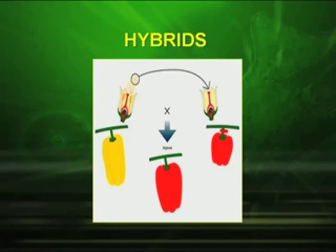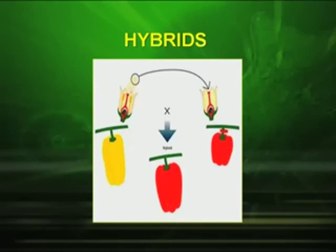Another very important term we often use in genetics is hybrid. As you can see in the diagram, there is a cross between one plant and another. A yellow crossed with a red produces a hybrid. In one plant the character is yellow and long, in the other red and small, and the hybrid is somewhat in between the two parents. That is called a hybrid.